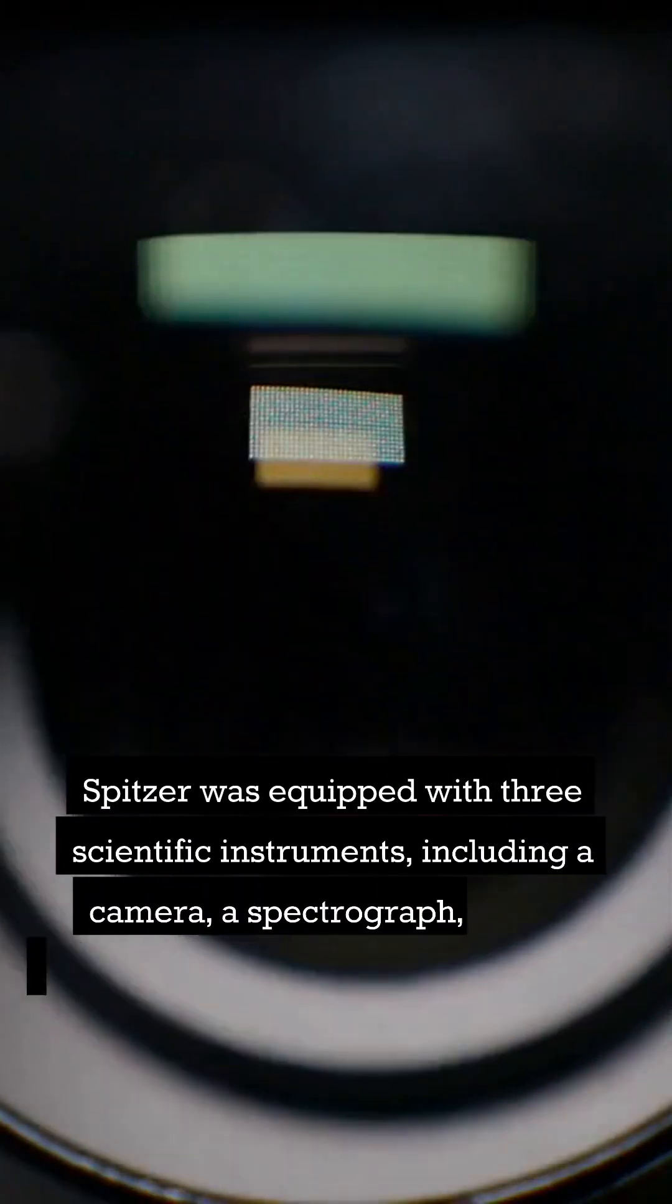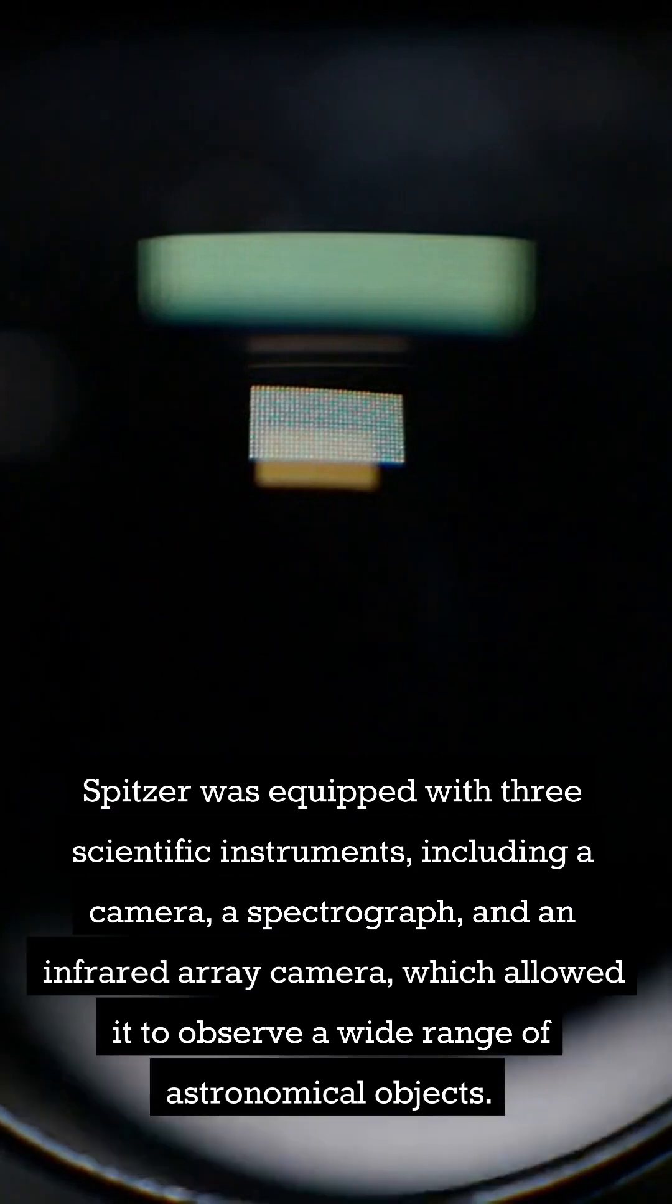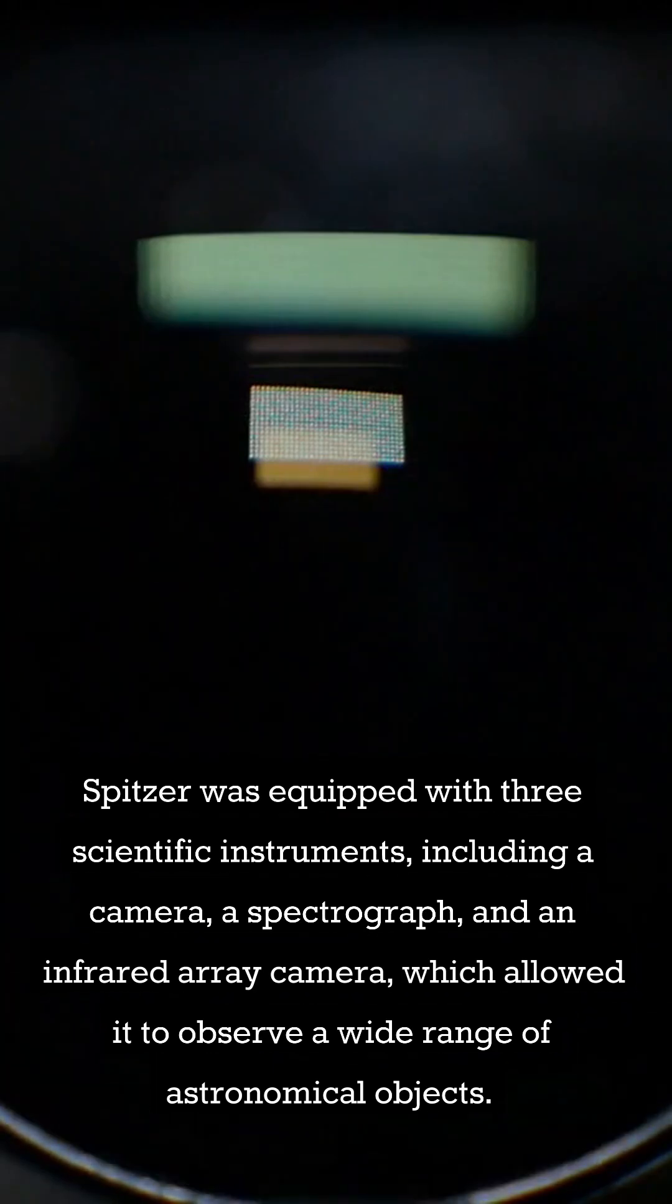Spitzer was equipped with three scientific instruments, including a camera, a spectrograph, and an infrared array camera, which allowed it to observe a wide range of astronomical objects.